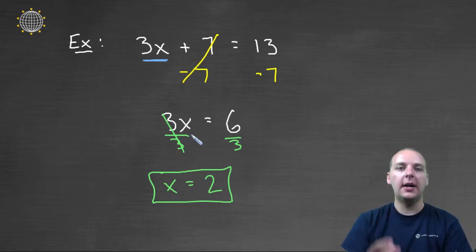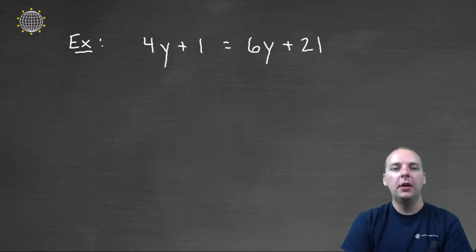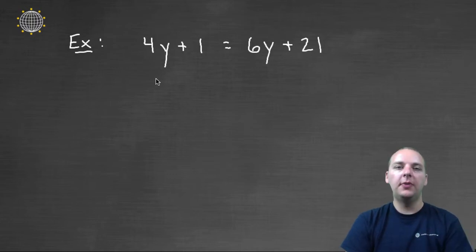So simplify both sides, move the variables to one side, constants to the other, and then thirdly divide by the variable's coefficient. Let's look at another example. This one, 4y + 1 is already simplified, 6y + 21 is already simplified, so I can skip step one.